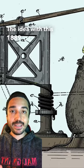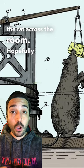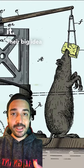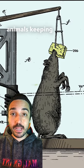The idea with this 1889 trap was to essentially smack the rat across the room, hopefully killing it. Their big idea was that it smacked the rat away so it would not smell like dead animals keeping others at bay.